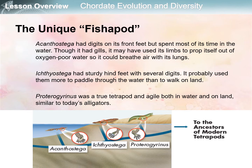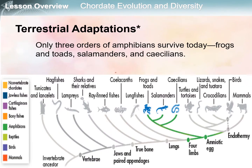The Ichthyostega had sturdy hind feet with several digits and probably used them more to paddle through water than to walk on land, though this group had started walking on land. The Proterogenerus was a true tetrapod, agile both in water and on land, similar to today's alligators — this group could already survive on land for a longer time.